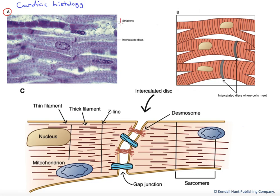First, we see the presence of striations. Striations are these little stripes found in individual cells that are indicative of the presence of sarcomeres, the contractile units of striated muscle. The sarcomeres are where you find the overlapping thick and thin filaments that allow the generation of tension development.